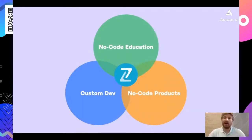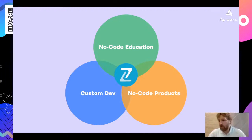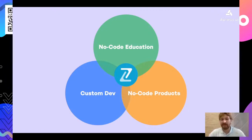No-code products have a steeper, longer curve compared to consulting or custom development. With consulting, you sell an hour and get money immediately. With products, you put a lot of work in, and it may not sell well at first — it may flop. But in the long run, this is where you want to be, because it's something that works while you sleep and sells regardless of whether you're actively working or not.